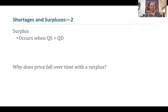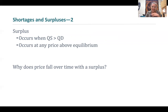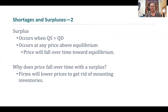A surplus is the opposite — a situation where quantity supplied exceeds quantity demanded. There's too much of a good available in the market and not enough people who want it; think of shelves full of stuff that just isn't selling. This happens when the price is too high or above equilibrium. To get rid of excess inventory, you put it on clearance — you have a sale. So prices fall over time back to equilibrium, and firms lower prices to clear any excess inventory.